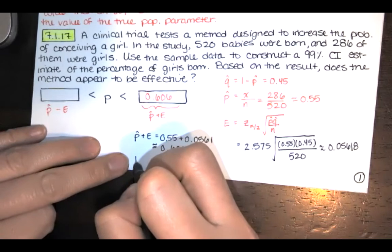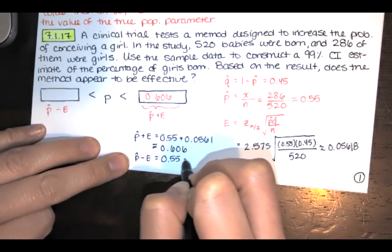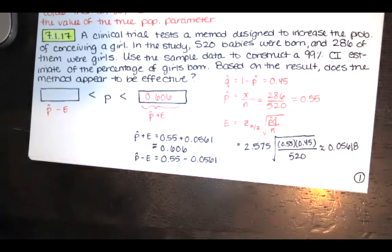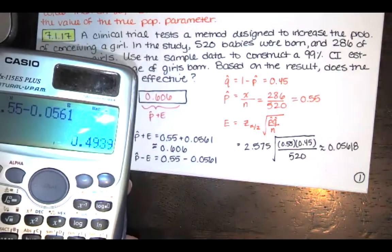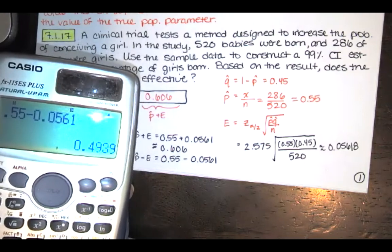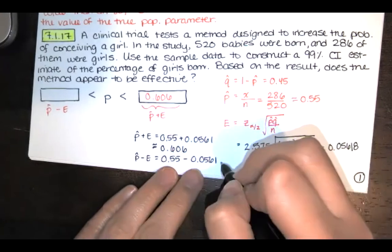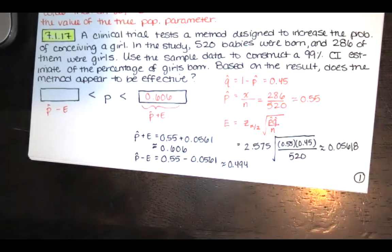And then I will take P hat and subtract the error to get our lower bound. So 0.55 minus 0.05618, approximately. We get that answer, which is about 0.4939. So I'd round up to 0.494 if I'm asked to round to three decimal places.